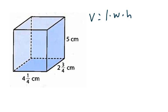Okay, so we have our length here, right? So, we are going to plug in the values that we have and that we know. So, I am going to keep my volume is equal to 4 and 1 fourth times 2 and 3 fourths, that is my width, times 5 for my height.